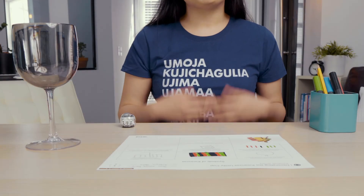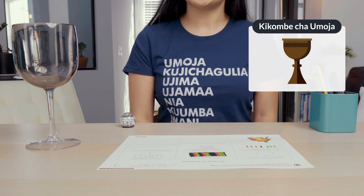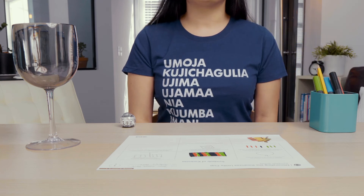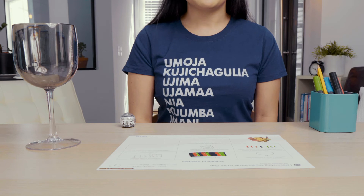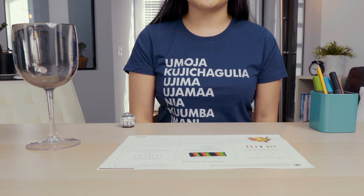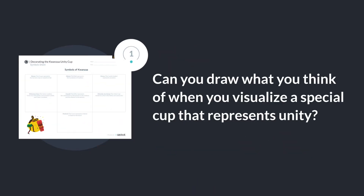The unity cup, or Kikome Cha Umoja, reinforces unity in the family and the community. During the seven days of Kwanzaa, each family member drinks from this cup and remembers the things that bring them together. The cup is usually a goblet-style drinking cup. Can you draw what you think of when you visualize a special cup that represents unity?